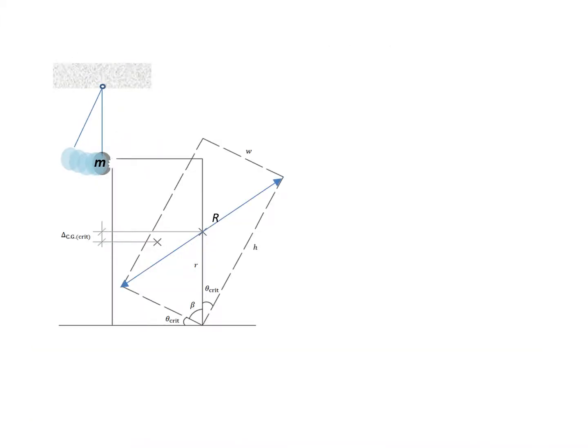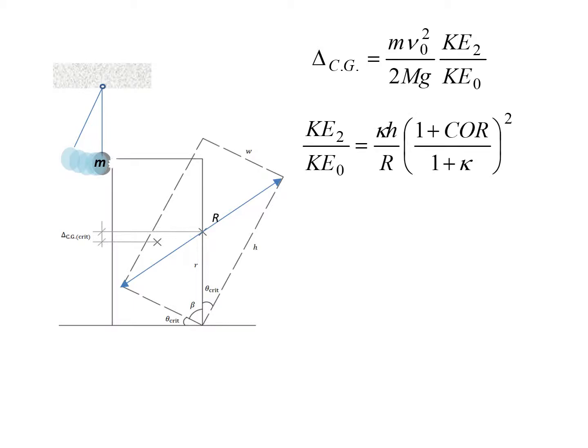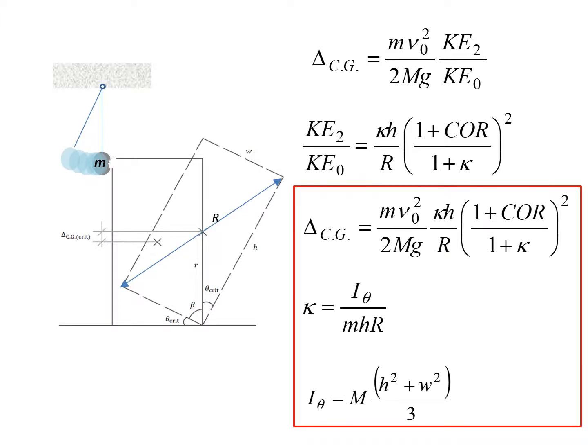It is shown that the expression for determining the value of delta subscript CG, the lifting of the center of gravity, is very similar in form to that of a lump mass system. Now then, we have got a new parameter kappa, which is a function of I theta, which is the rotational inertia of the overturning object as shown on the diagram.